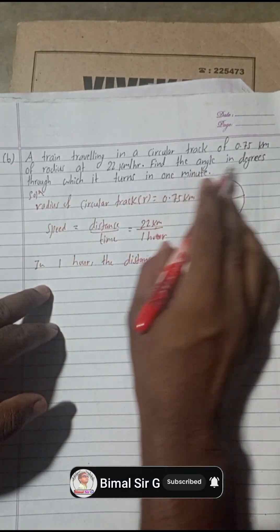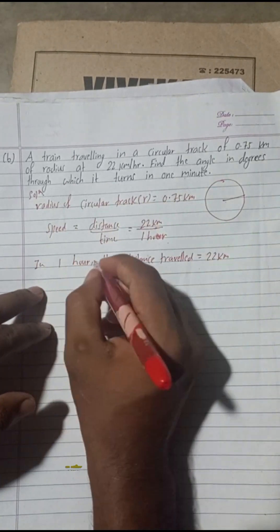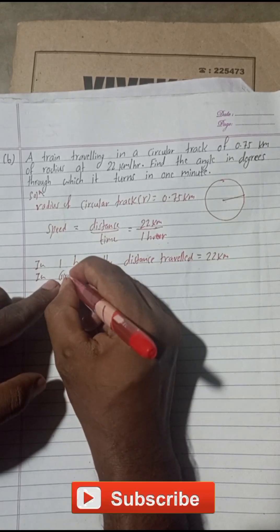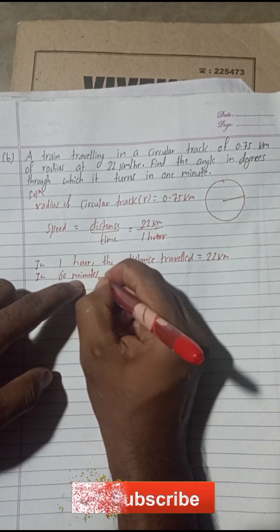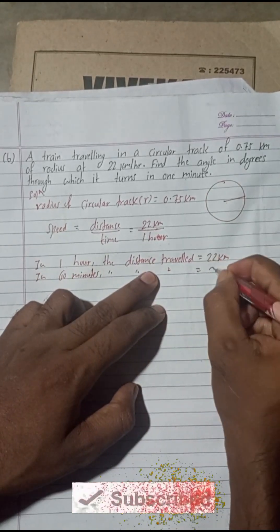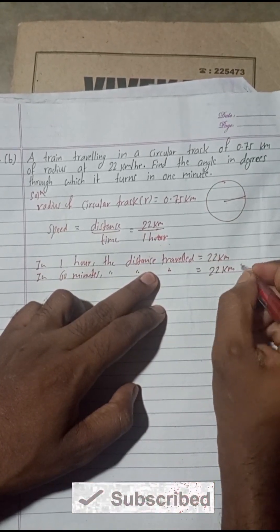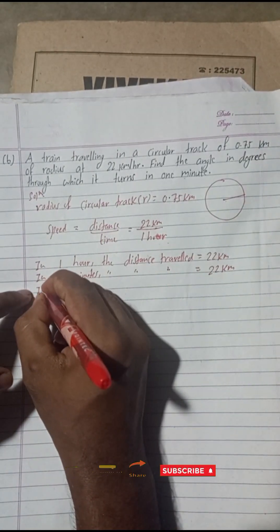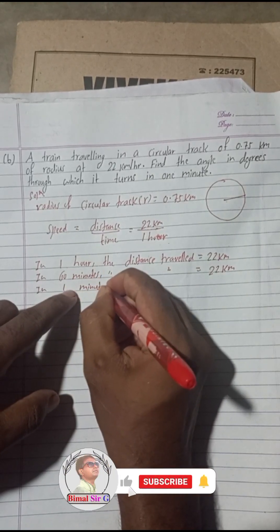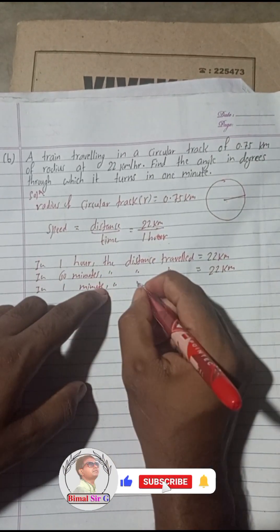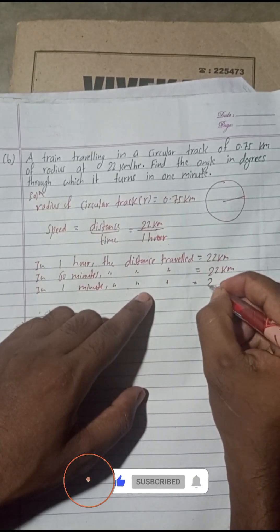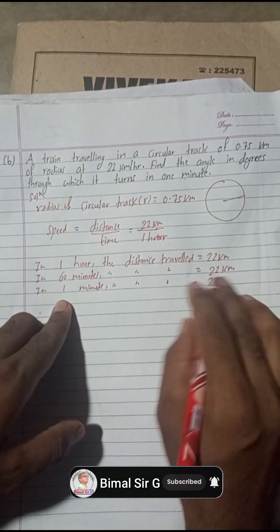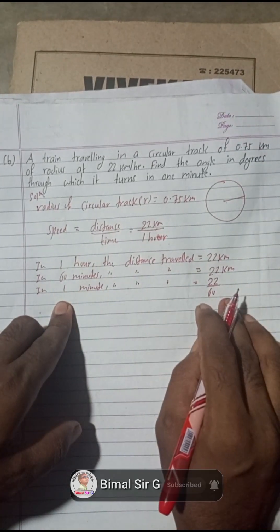We have to find the angle in one minute, so we need to convert. One hour equals 60 minutes, and in one hour the distance traveled is 22 kilometers. So in one minute, the distance traveled is equal to 22 divided by 60. Because in 60 minutes the train travels 22 kilometers, so for one minute we divide.